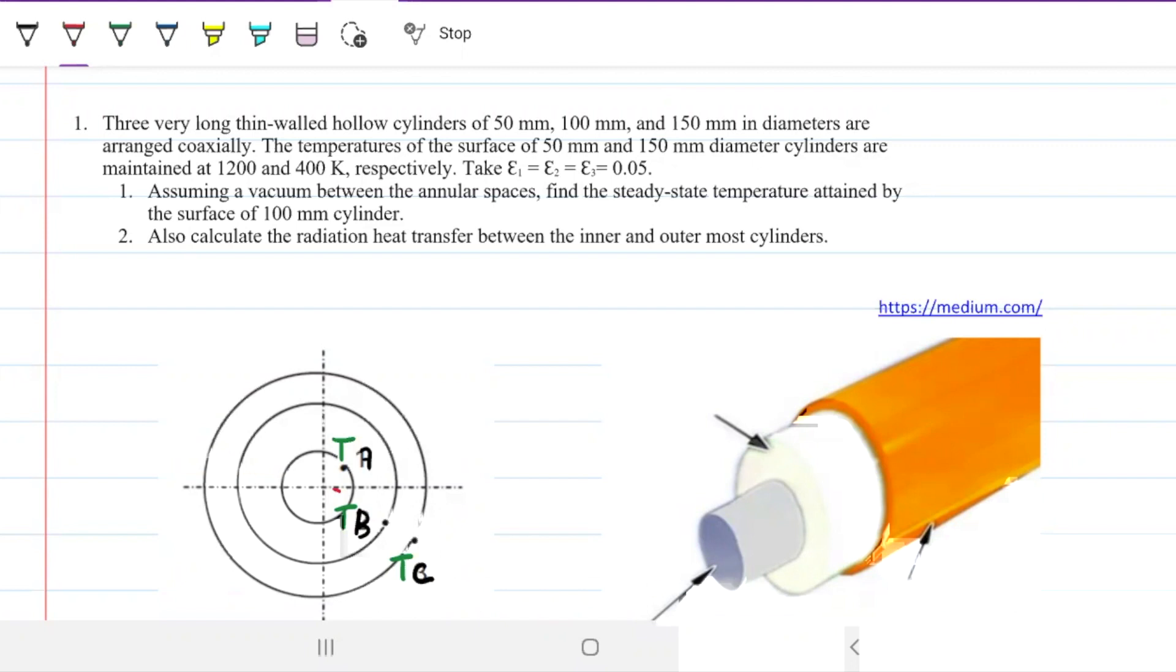The temperatures of the surfaces of the 50 and 150 meter diameter cylinders are maintained at 1200 Kelvin and 400 Kelvin. So the one with the smallest radius has the biggest temperature, and the one with the biggest radius has the smallest temperature.